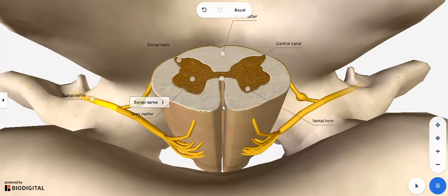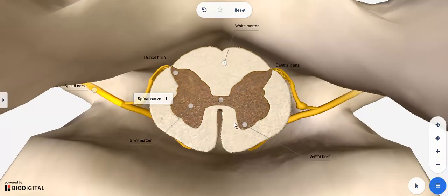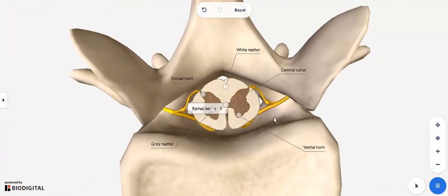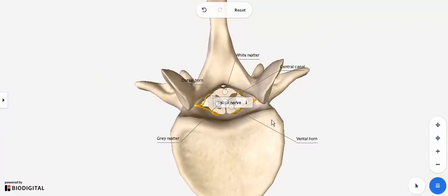The anterior median fissure, this is exactly where you had your anterior spinal artery. If you can remember, the two arteries coming from the vertebral arteries. Now if you look at the grey matter, although it gives a butterfly shape, that is describing it with a simile.